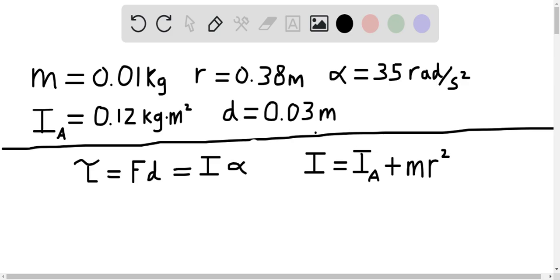The arm's rotational inertia is 0.12 kilograms times meters squared, and the tricep muscle attaches at a distance of 0.03 meters from the elbow joint, which we call d.